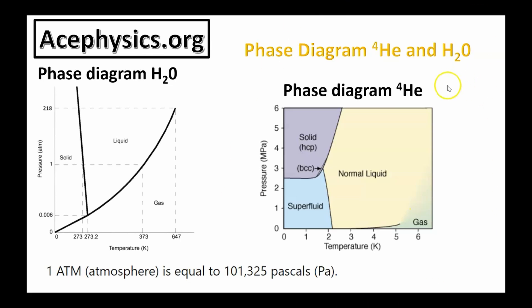Here's the phase diagram of helium-4. At 1 megapascal of pressure at 0 temperature, you're in a superfluid phase — a phase of matter that doesn't exist for water. As you increase the temperature, you stay in the superfluid phase until roughly 2 Kelvin, where there's a phase change requiring extra heat input, and it transitions from superfluid to a normal liquid. Keep increasing temperature and eventually you'll get into a gas of helium.